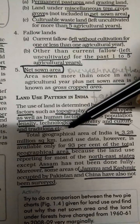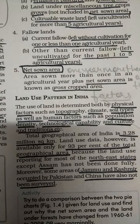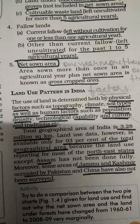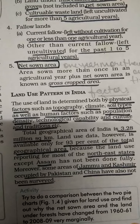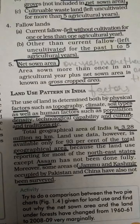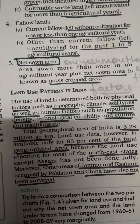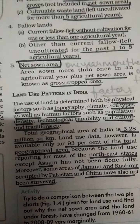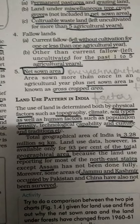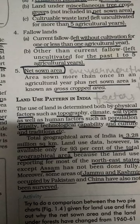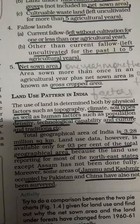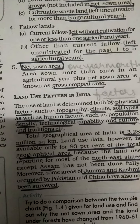Now, the land use pattern in India. The use of land is determined by both physical and human factors. Physical factors include topography, climate, and soil type. Human factors include population density, technological capability, and cultural traditions.